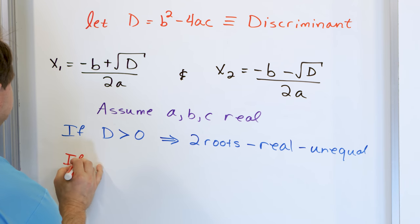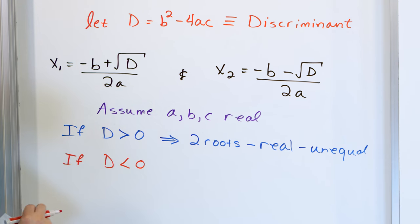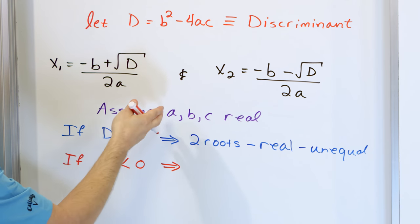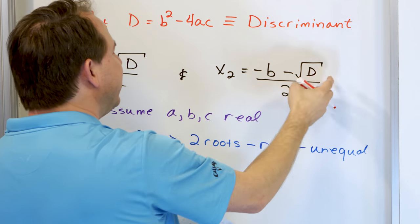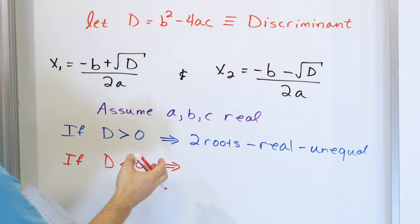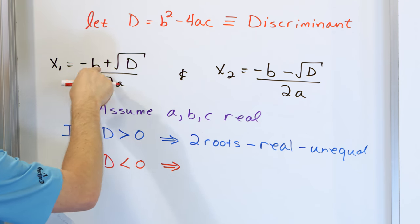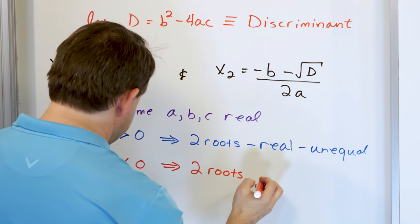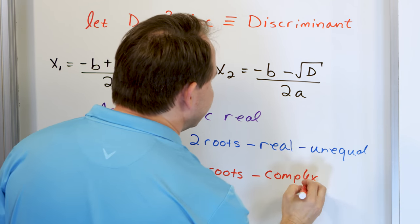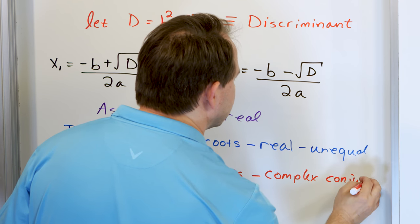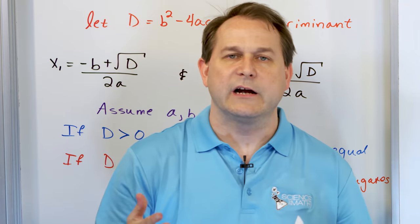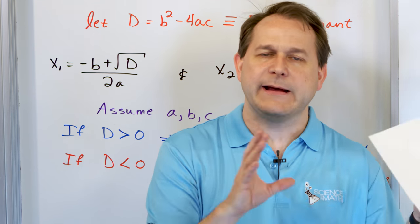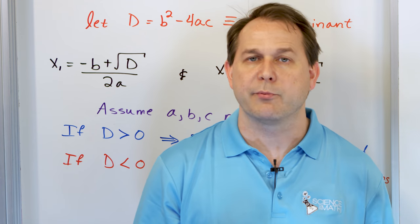Case number two: what if the discriminant isn't bigger than zero — what if it's smaller than zero? If it's negative 36 under the radical, when you take the square root of that you're going to get 6i, because you have a negative number under the radical and you always have to have an i. So you're still going to have two roots, but they're not going to be real anymore — you've introduced an i anytime the discriminant is less than zero. So you're going to have two roots that are complex conjugates.